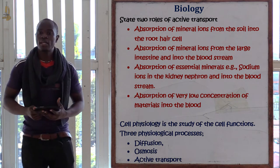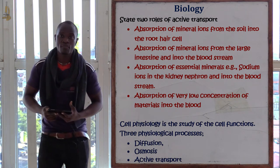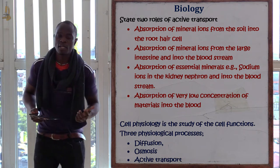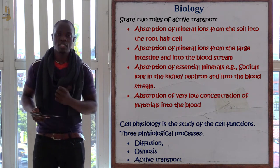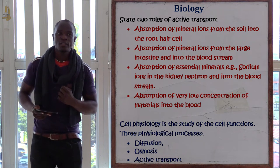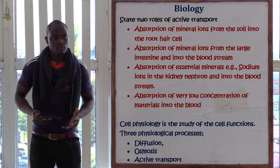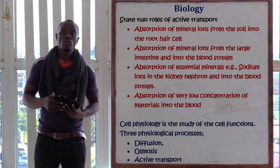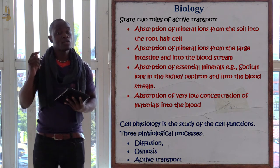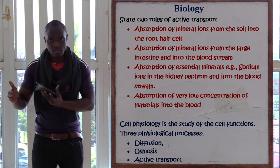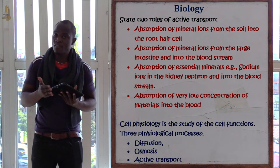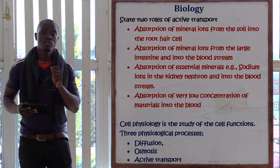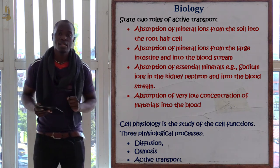Examples of living tissue you might be given include banana peel, a potato, or an orange peel. Unless the question states otherwise, if you have been given any living tissue, note that osmosis is being tested.